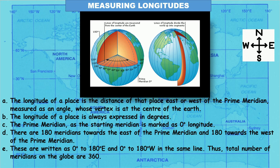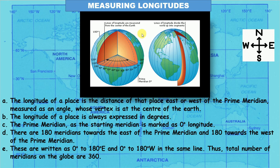The longitude of a place is always expressed in degrees. The prime meridian is marked as 0° longitude. There are 180 meridians to the east and 180 to the west of the prime meridian, written as 0° to 180° east and 0° to 180° west. Thus the total number of meridians on the globe is 360. Longitudes help us find a place to the east and west of the prime meridian, while latitudes help us find places to the north and south of the equator.